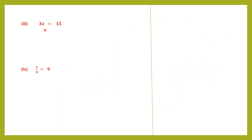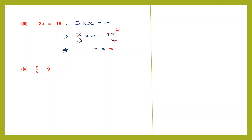Question 3: 3x = 15. That means 3 × x = 15. We need only x, and since 3 is in multiplication, we divide both sides by 3. So (3/3) × x = 15/3. The 3s cancel to give 1, and 1 × x is simply x. On the right-hand side, 3 fives are 15, so x = 5. We have solved for x.